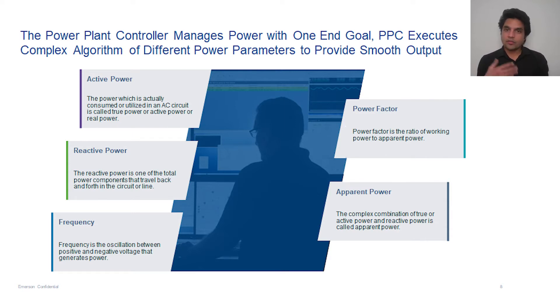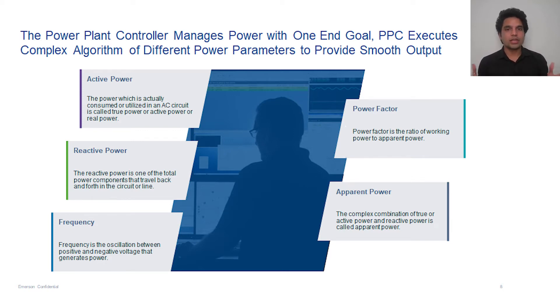Then frequency. As we all know, frequency is the oscillations per second. So if we have 50 Hz frequency, this means 50 AC cycles per second.